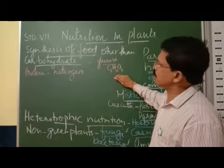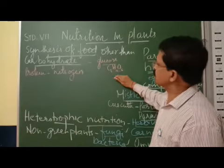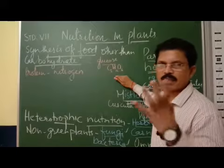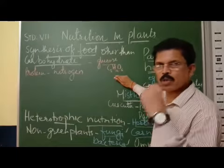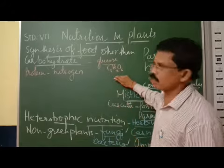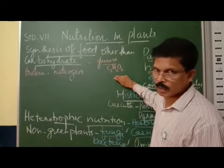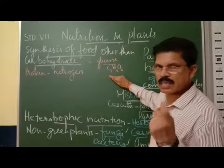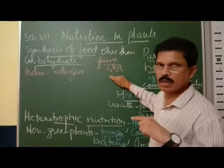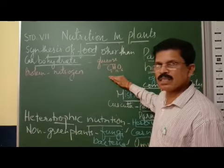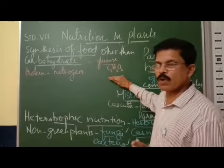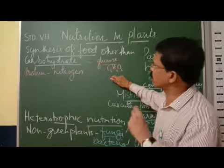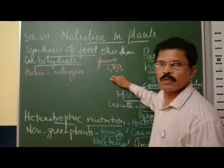The carbohydrate glucose is stored in plants as starch. So starch is the storage form of food in plants. Because glucose is unstable, starch is stable. Starch is the stable form of carbohydrate which helps in the storage of food in plants.